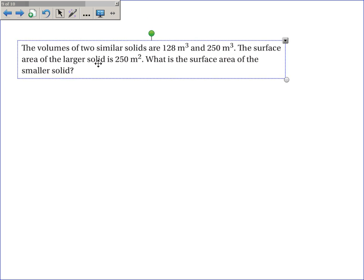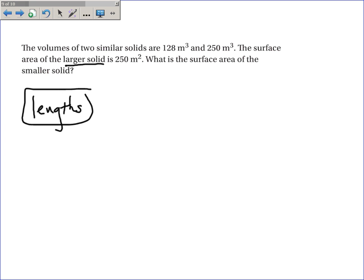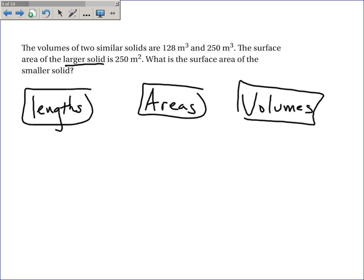The volumes of two similar solids are 128 and 250. The surface area of the larger solid is 250. What is the surface area of the smaller solid? So, I have length, I have areas, I have volumes. So, the volumes of two solids are 128 and 250. Now, these are both even numbers, so I will simplify as much as I can. Divide both by 2. I get 64 over 125. And that's all the common factors we have.